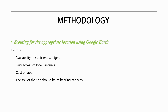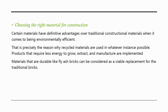In the methodology, while scouting for an ideal location it is important to consider factors such as availability of sufficient sunlight, easy access to local resources, cost of labor, and the bearing capacity of the soil. For choosing the right construction material, recycled materials are used wherever possible, and products that require less energy to grow, extract, and manufacture are implemented. Durable materials like fly ash bricks can be considered a viable replacement for traditional bricks.